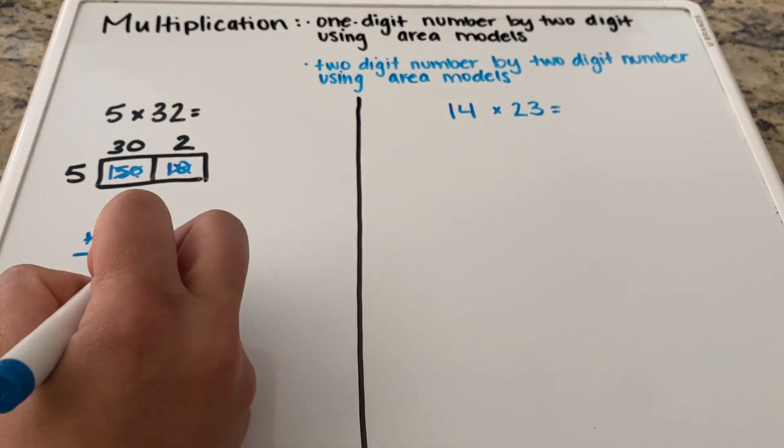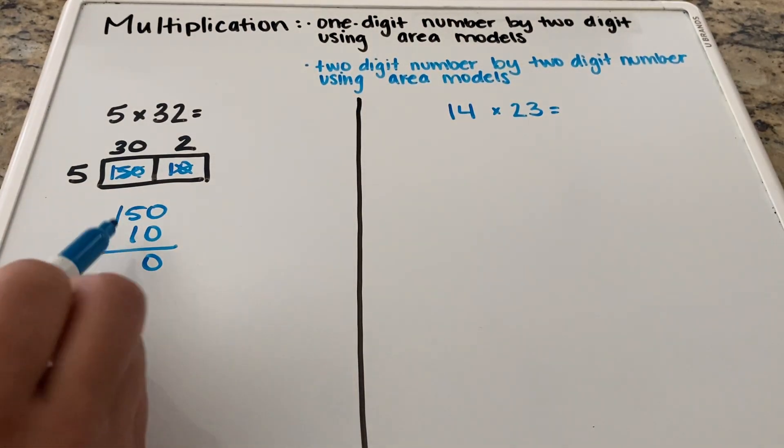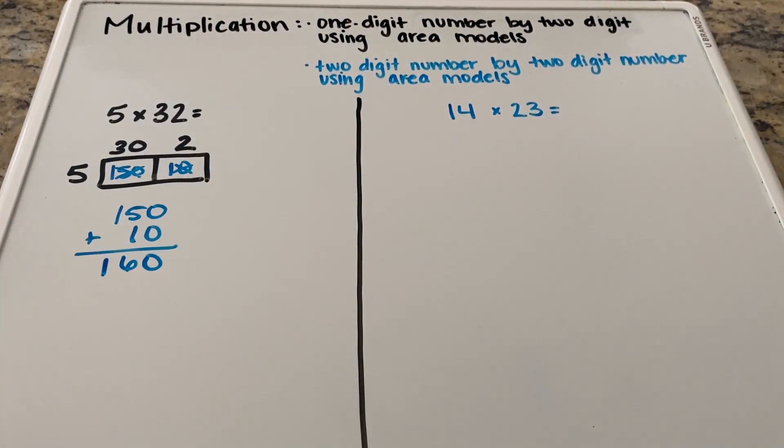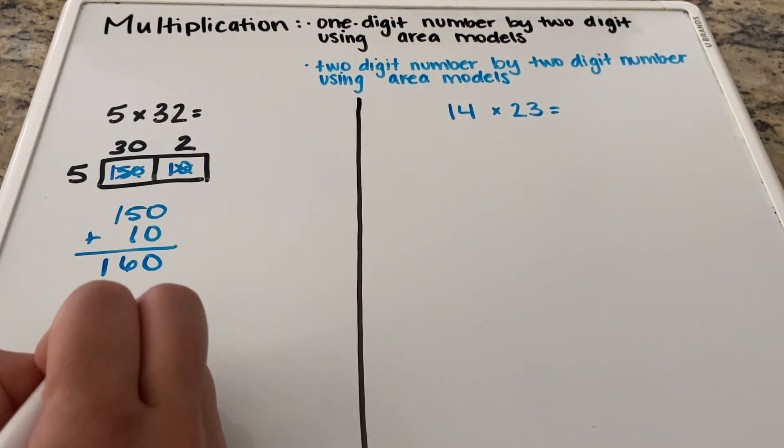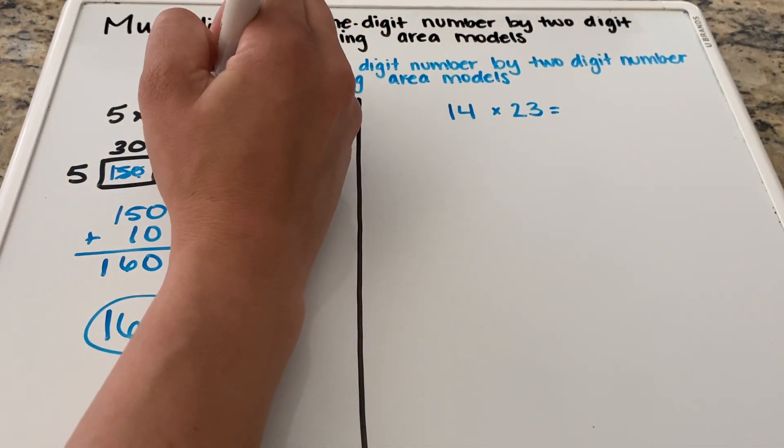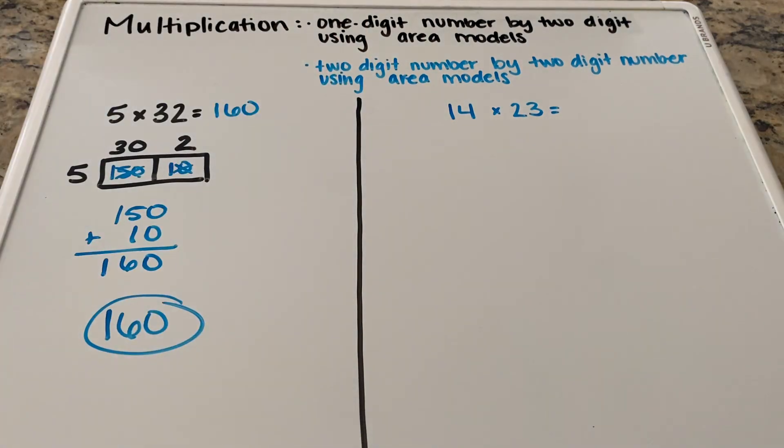They're both taken care of and we're simply going to add straight down. So zero plus zero is zero. Five plus one is six. One is one. So our answer is 160. Five times 32 is 160.